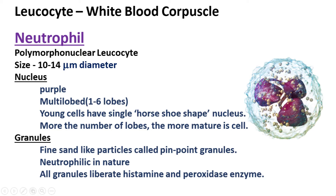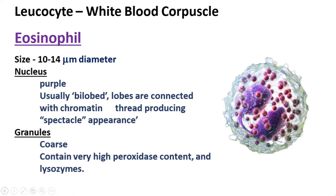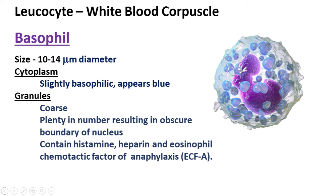Neutrophil granules are fine, sand-like, also known as pinpoint granules; they are neutrophilic in nature and liberate histamine and peroxidase enzyme. Eosinophils vary from 10 to 14 micrometers in diameter, with a bilobed purple nucleus where both lobes are connected by a chromatin thread, producing a spectacle appearance. Their granules are coarse and contain very high peroxidase content and lysozymes. Basophils also vary from 10 to 14 micrometers; their cytoplasm is slightly basophilic and appears blue, with coarse and plentiful granules that obscure the nucleus boundary.